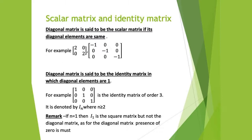Diagonal matrix is further classified as the scalar matrix and identity matrix. A diagonal matrix is said to be the scalar matrix if its diagonal elements are the same. We call a diagonal matrix a scalar matrix when its diagonal elements are the same.